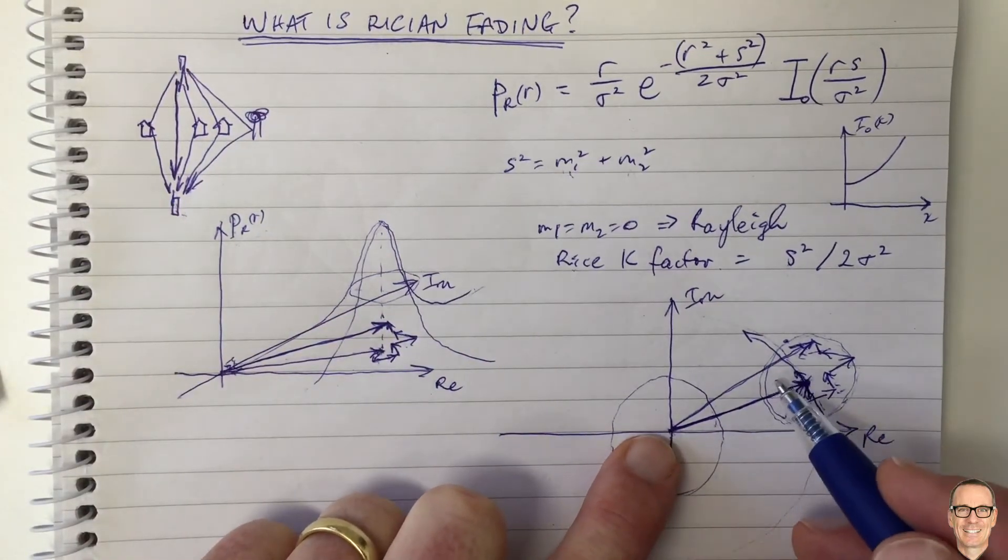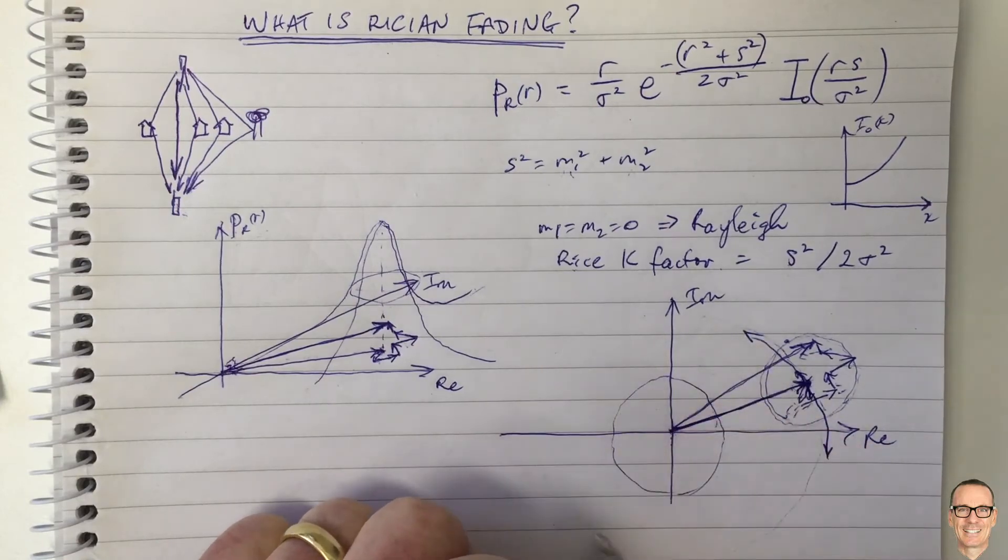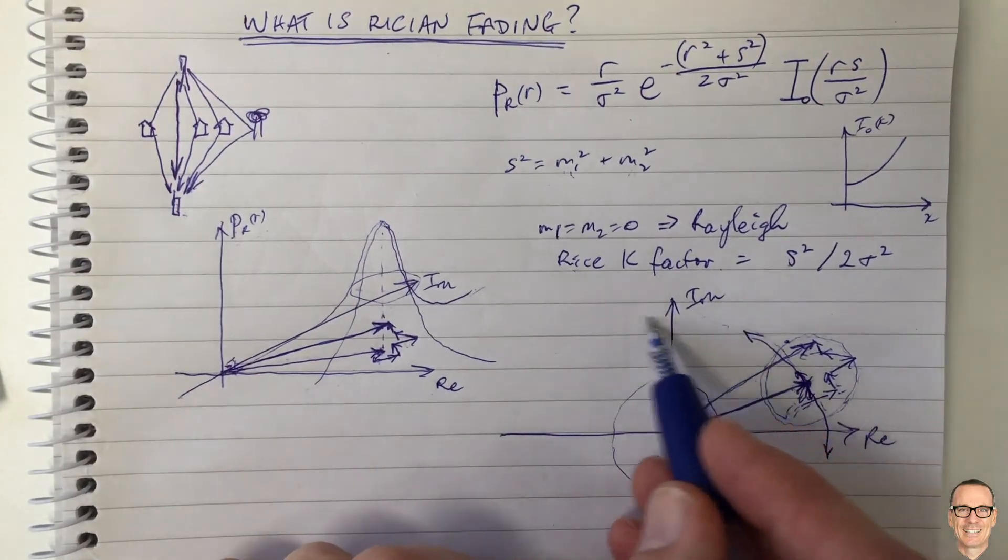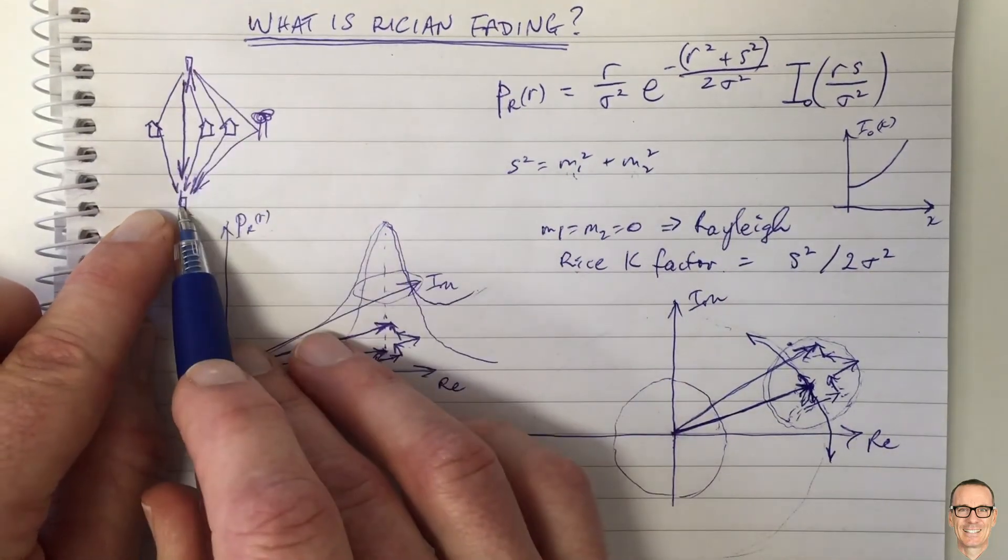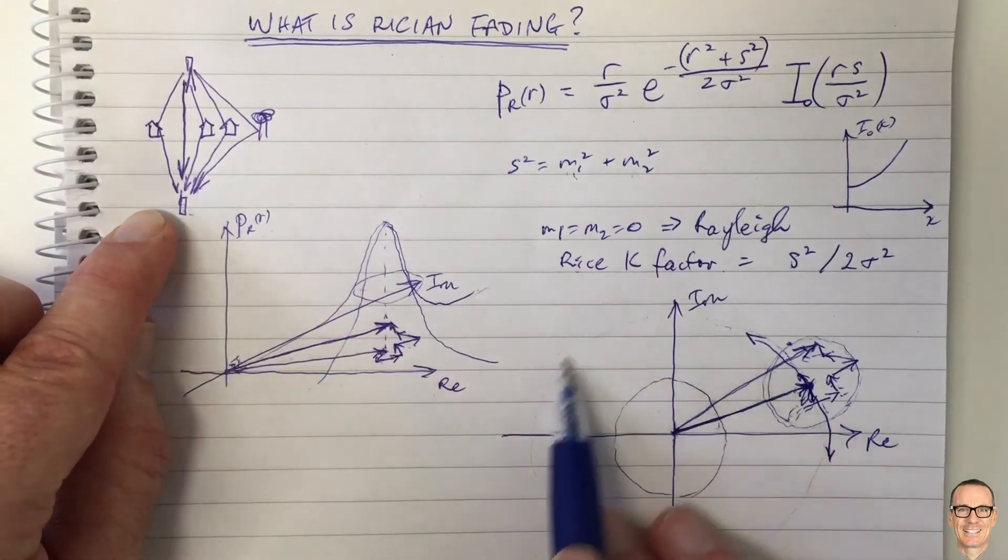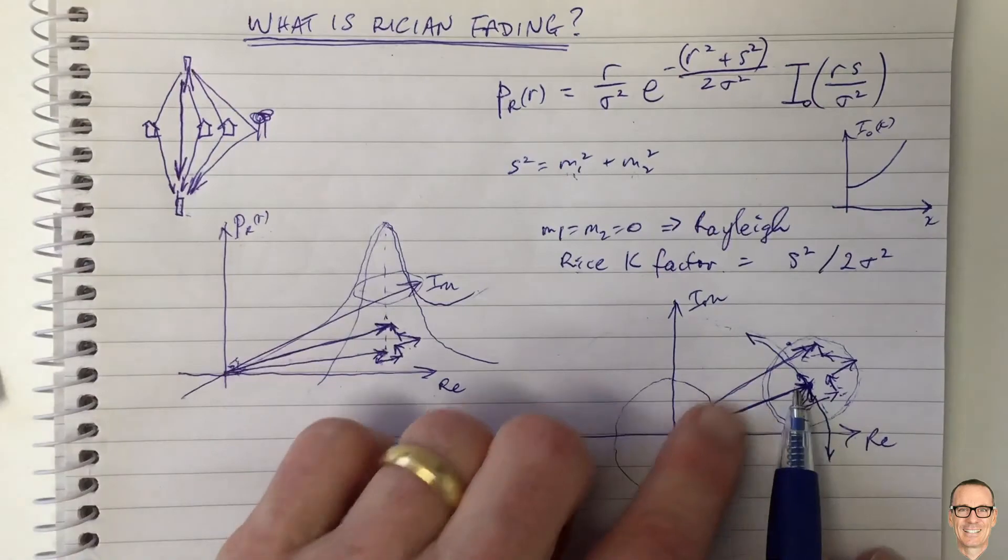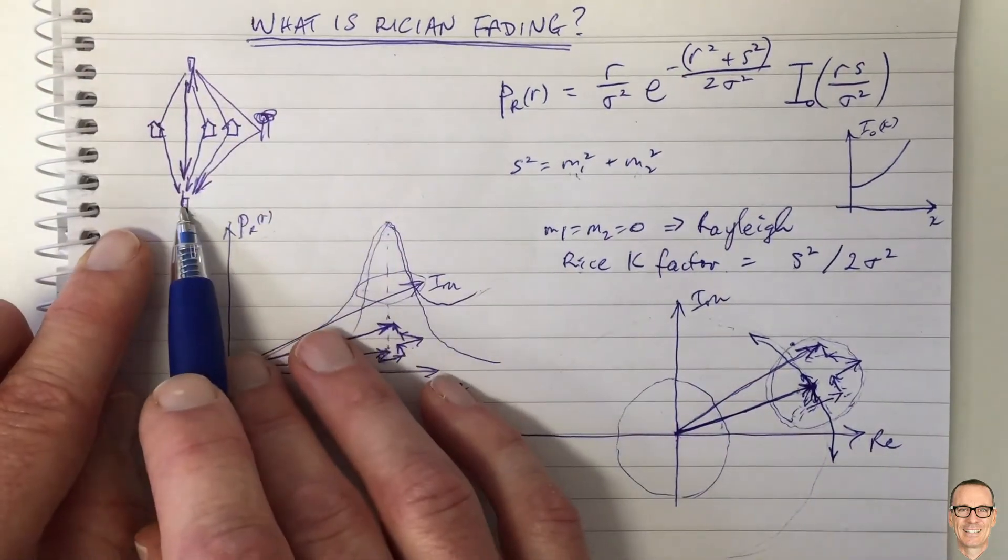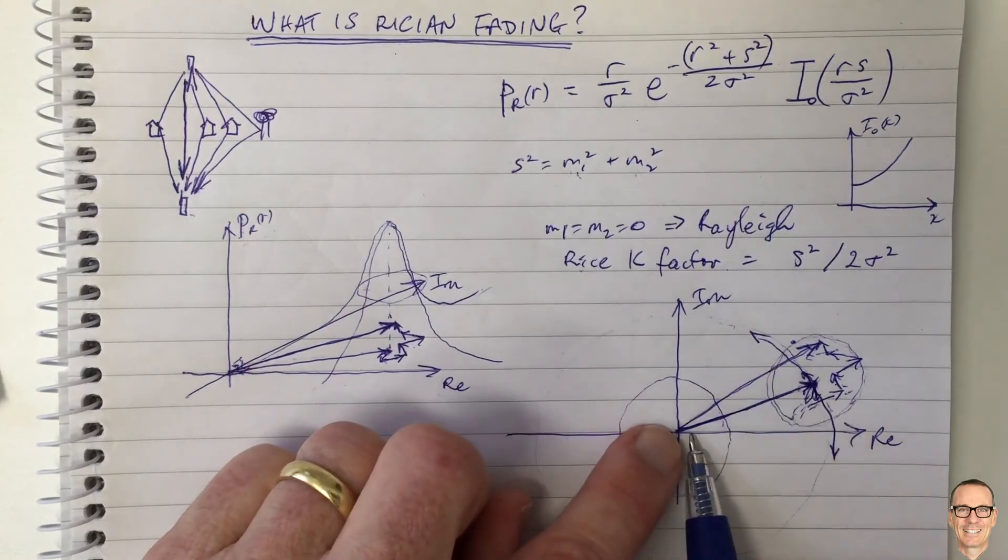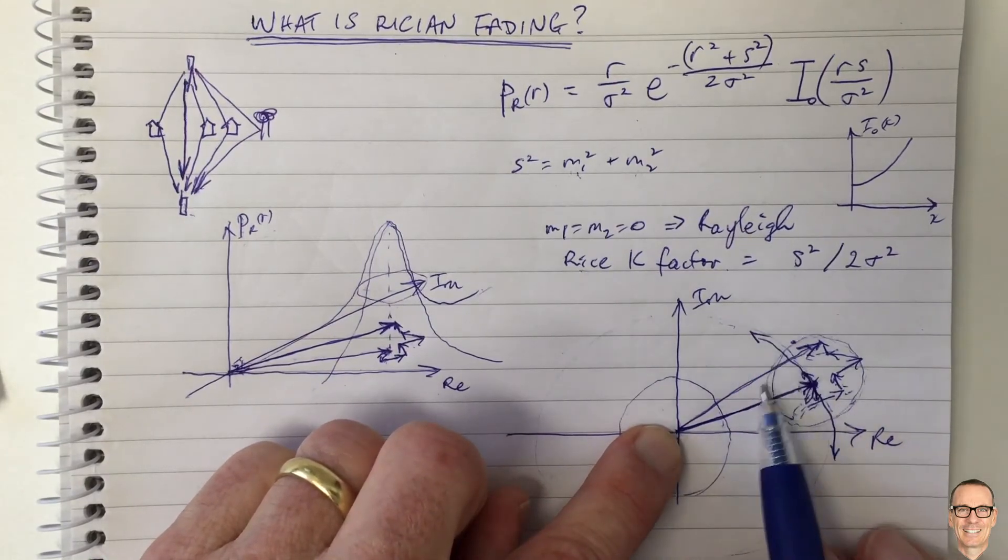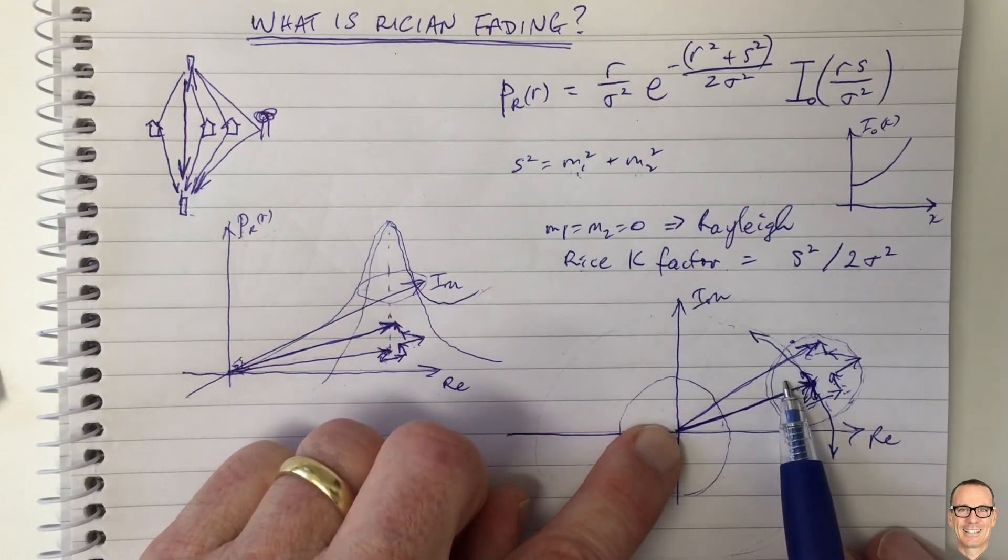So in total, it is true that overall, all of the phases will be equally likely, because you don't know exactly what the distance is that you are away. And therefore, you will be, over time and moving around here in a random way, you will be moving all around this phasor diagram. So the phase will also be uniformly distributed for Rician.